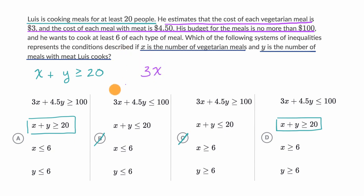And what about meat meals? Well, it's going to be Y meals times $4.50 per meal, so it's 4.5 times Y. The amount that he's spending on vegetarian meals, the amount that he's spending on non-vegetarian meals, that's the total he's spending on meals. And they say it is no more than $100, so this has to be less than or equal to 100.